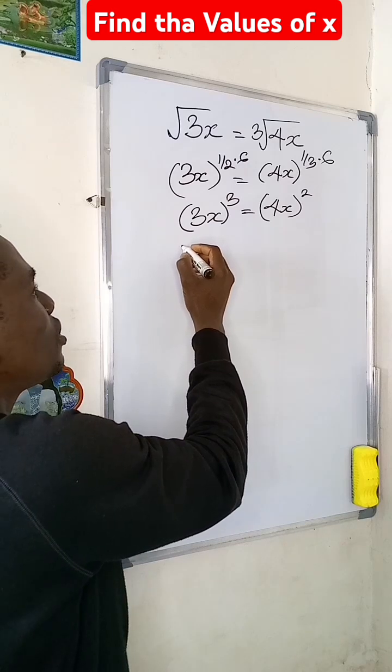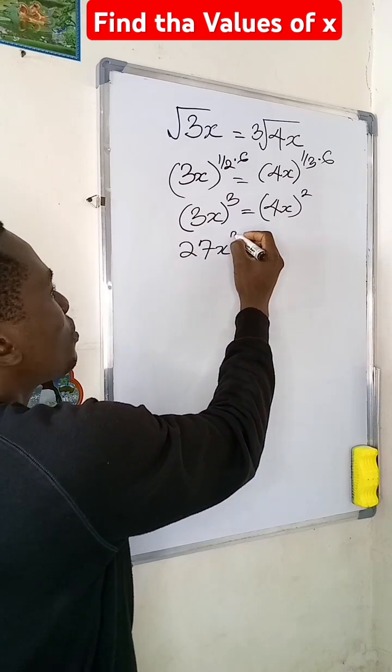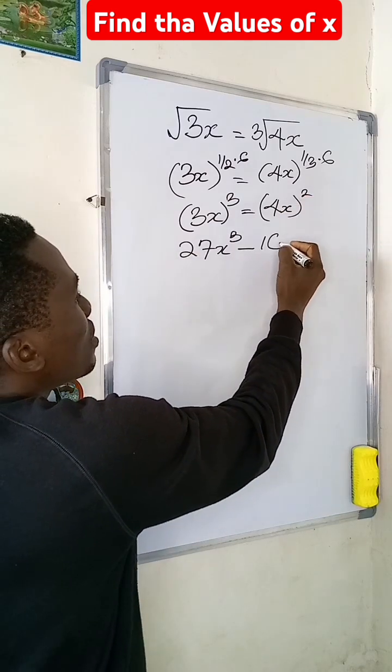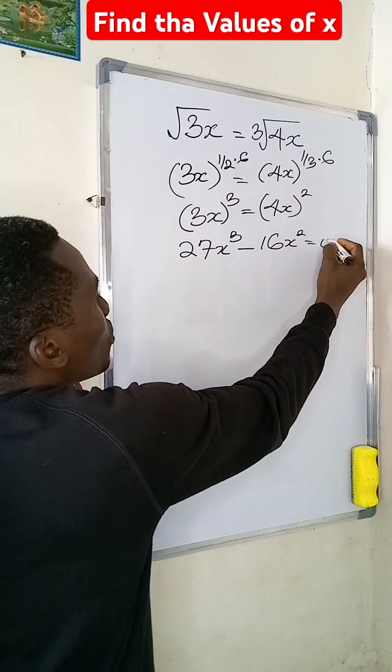Now if I expand that expression, I'm going to have this give me 27x to the power of 3 minus 16x to the power of 2, and this will be equal to 0.